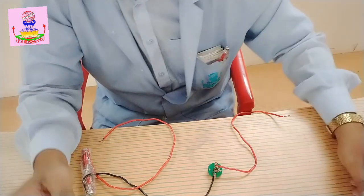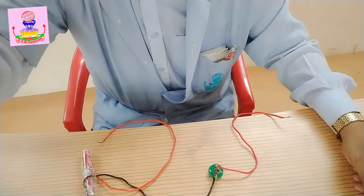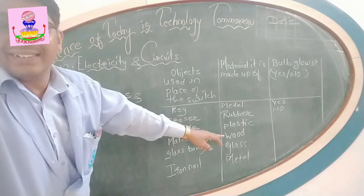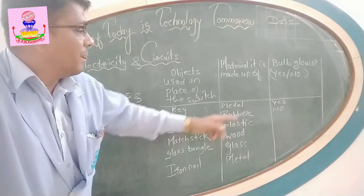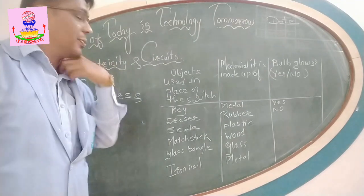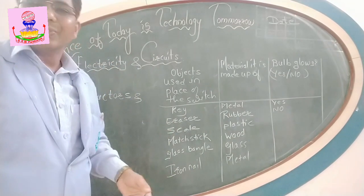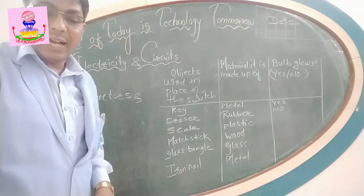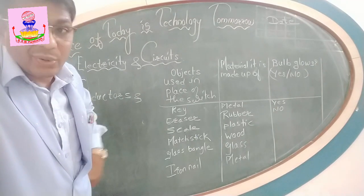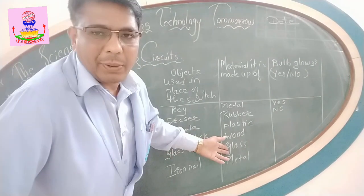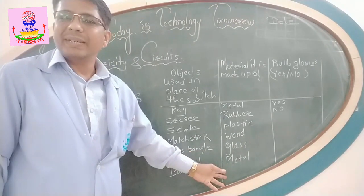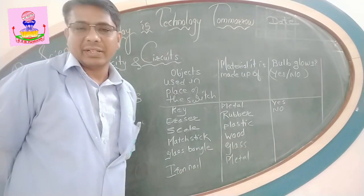Let us now make the table on the board. A plastic scale — was current flowing? No, so the bulb does not glow. Wood is a bad conductor. Mastic: bulb does not glow — it is an insulator. Glass bangle: electric current does not flow through glass, so the bulb will not glow — it is also an insulator. Iron nail: it is metal, and the bulb glows, so it is a good conductor.